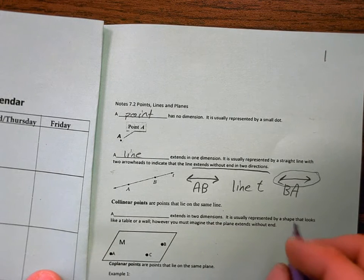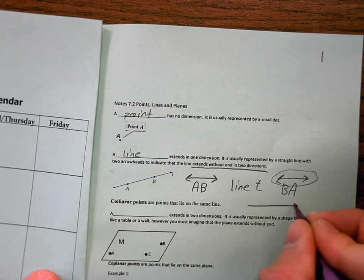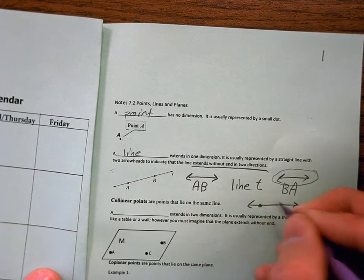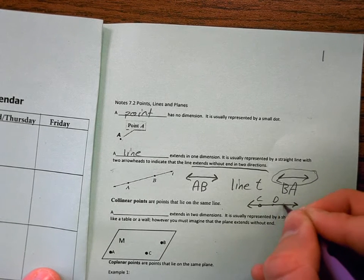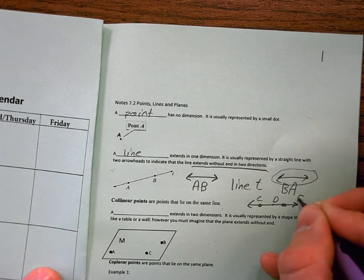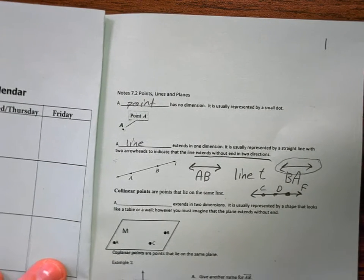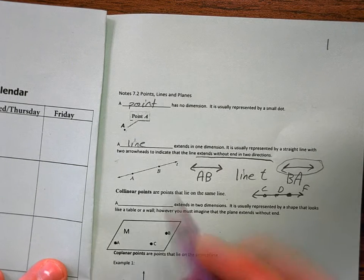Now, we don't have a picture for this, but I want you to draw a line. Let's make point C, D, and F. C, D, and F are all collinear. They are on the same line.